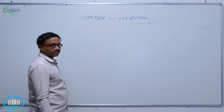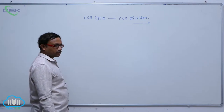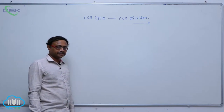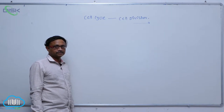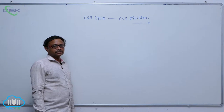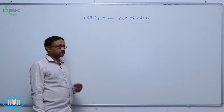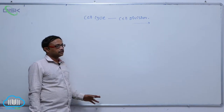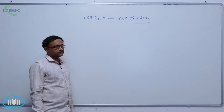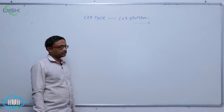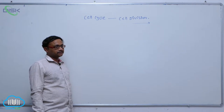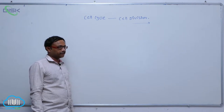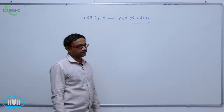In interphase, cell growth and DNA replication occur continuously and in an orderly manner. In DNA replication, it takes place in the S phase. The cell growth during interphase has mainly three parts: the first one is the G1 phase.